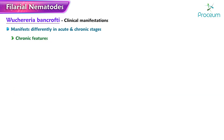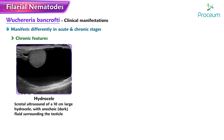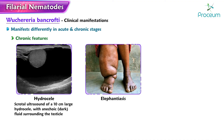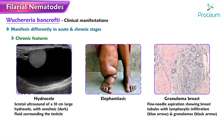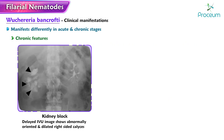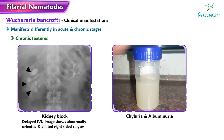Chronic features include hydrocele, elephantiasis, granuloma of the breast, kidney block, chyluria, and albuminuria, giving a white urine-like appearance.